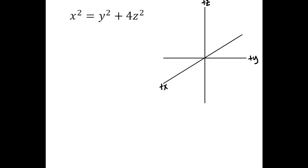This time we're going to graph the surface x² = y² + 4z² in R3. We're going to start, like usual, by doing one of the traces. We'll start with the trace in the yz plane.